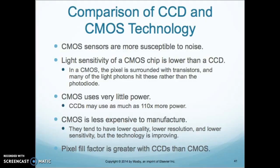The CMOS is less expensive to manufacture. They tend to have lower quality, lower resolution, and lower sensitivity, but the technology is improving. Pixel fill factor is greater with CCDs than with CMOS.